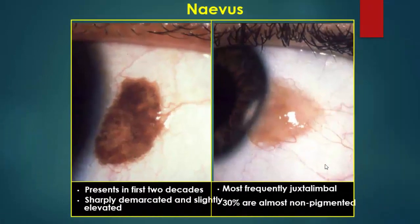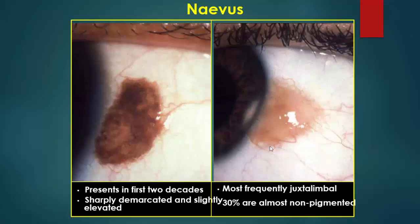Now we can discuss every tumor individually. Nevus is present in the first two decades of life. It is a sharply demarcated and slightly elevated lesion, most frequently just at the limbus, and 30% of cases are non-pigmented.